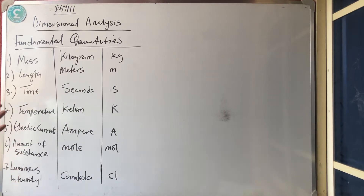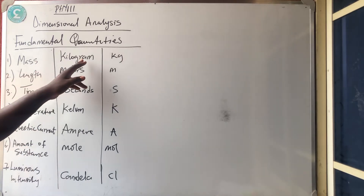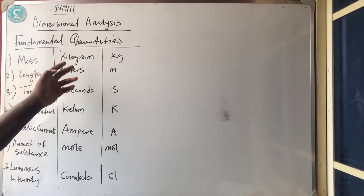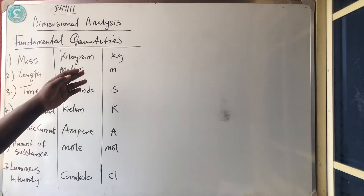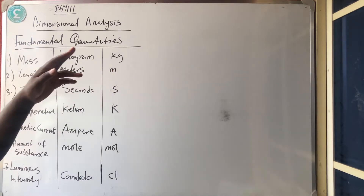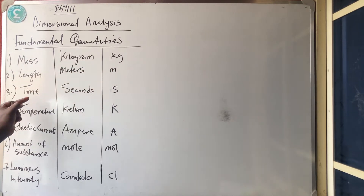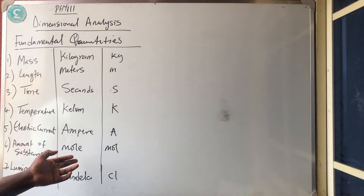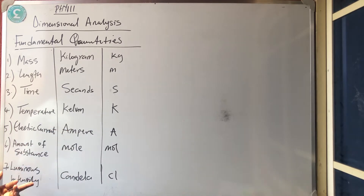The seven basic fundamental quantities you need to know are: mass, measured in kilogram (kg); length, measured in meters (m); time; temperature, measured in Kelvin; electric current, measured in Ampere; amount of substance, measured in mole; and luminous intensity, measured in candela.